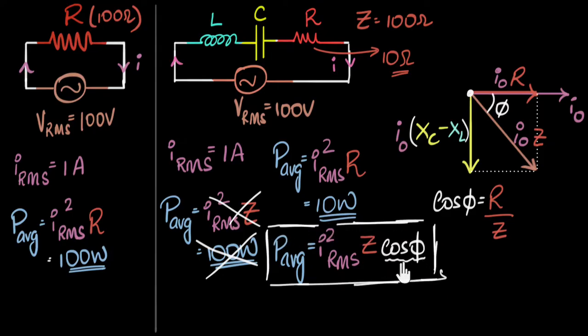And this number, cos phi, tells me how poor or how good my circuit is when it comes to power consumption. And so this number is called the power factor.